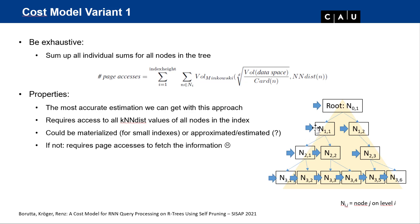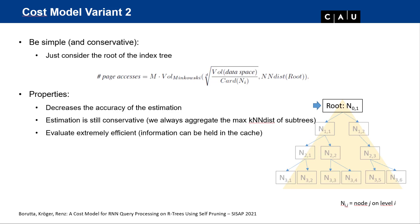The second variant, the simplest, considers only the root of the index tree. We take the k-NN distance only from the root, which stores the maximum of all maxima. This decreases estimation accuracy but not necessarily in practice, as the estimation is still conservative. Evaluation is extremely efficient because only one float value needs to be kept in cache.